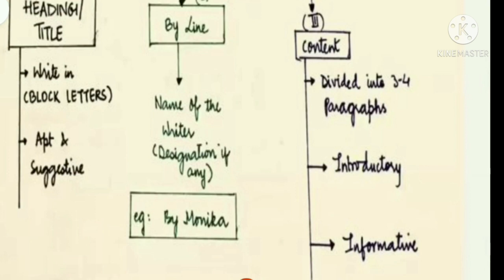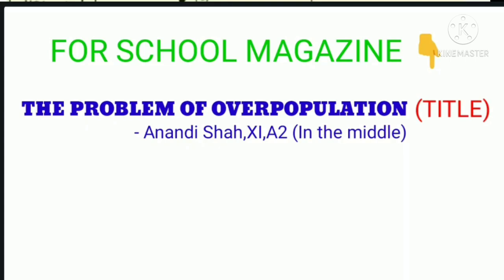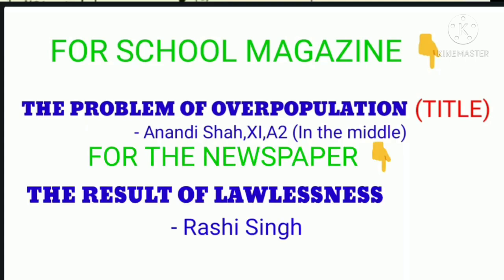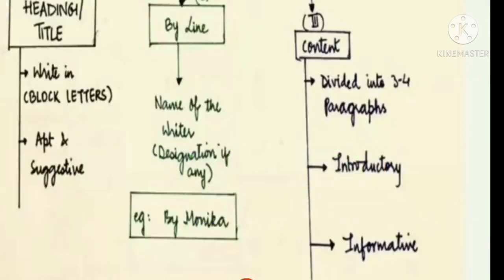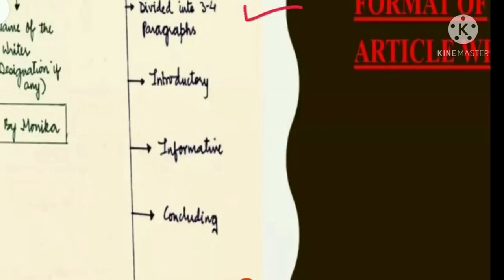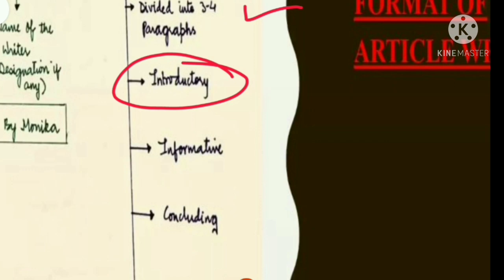If you are writing for a newspaper, you just have to mention your name. I hope that is clear. Now let's move towards the content. Content is divided into three to four paragraphs. In the first paragraph, you introduce the topic — for example, if it is about child labor, you mention what child labor is. Next comes the information paragraph, where you include all the pros and cons.